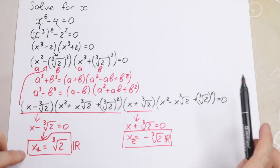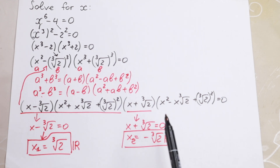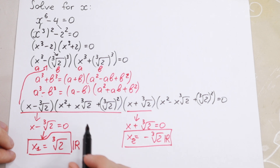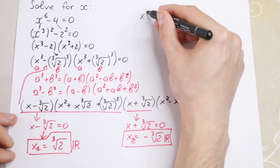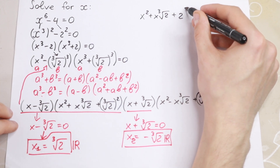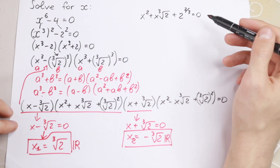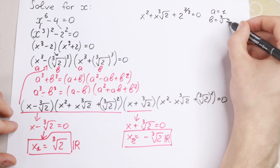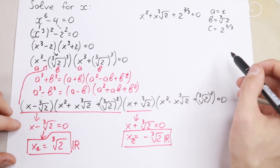We will also have two roots in each of the remaining parentheses, giving us x3, x4 and x5, x6. Let's solve the quadratic equation: x squared plus x times cube root of 2 plus 2 to the power 2/3 equals 0. Here a equals 1, b equals cube root of 2, and c equals 2 to the power 2/3. So we can find x3 and x4.